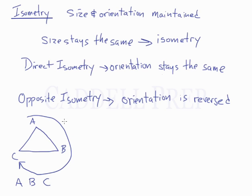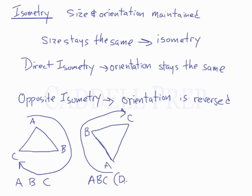So if we were to do some type of transformation and then we end up with this image, assuming it's the same size and we had this result, if we read it clockwise we would still read ABC. So this would be direct isometry. We'll call these A prime, B prime, and C prime. This is the original triangle.